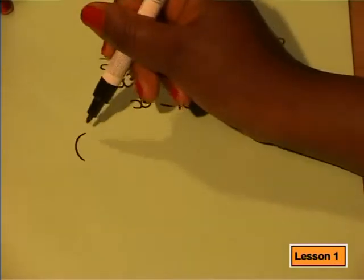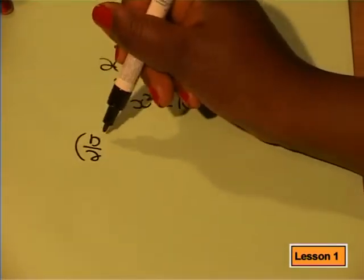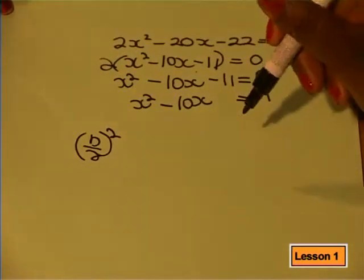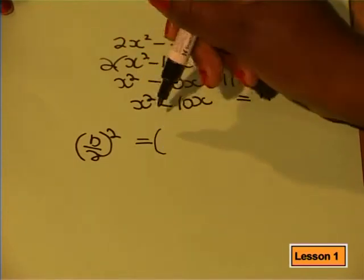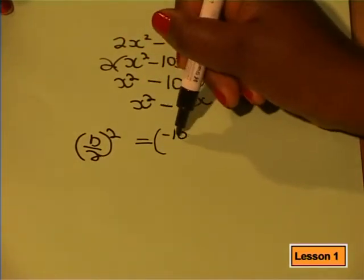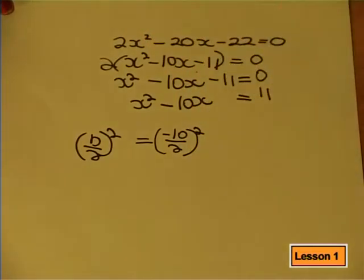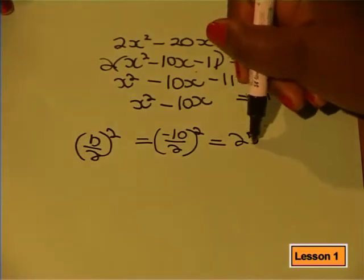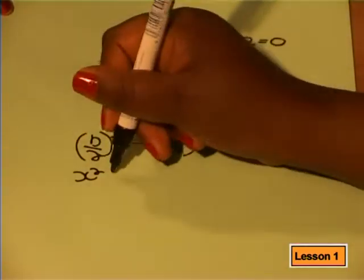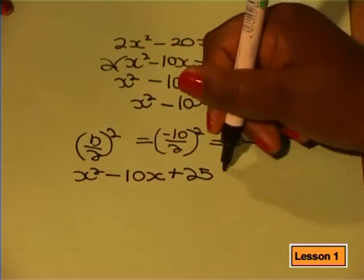In this step, we complete the square. To do this, we need to multiply b by a half and square it, which gives us 25. We then add it to both sides. You can do anything to an equation as long as you do it to both sides as a whole.